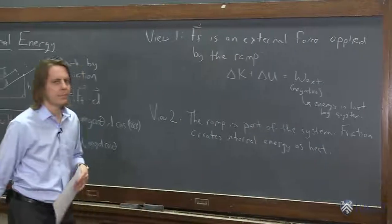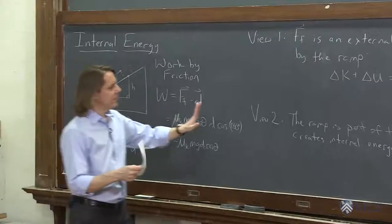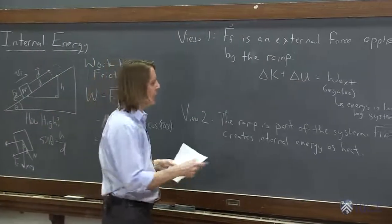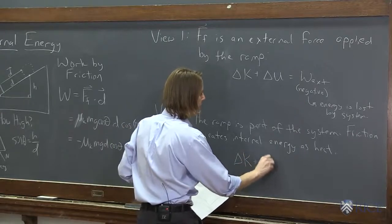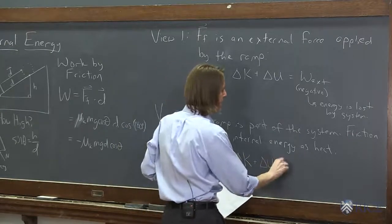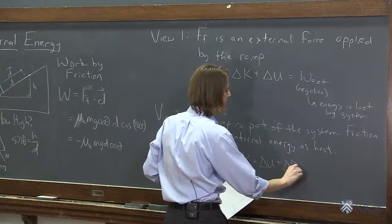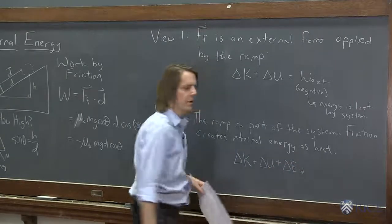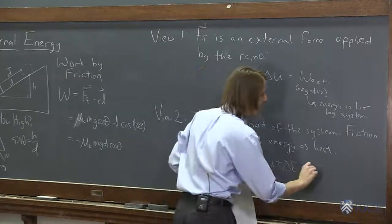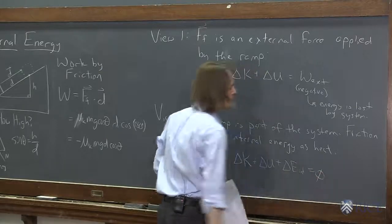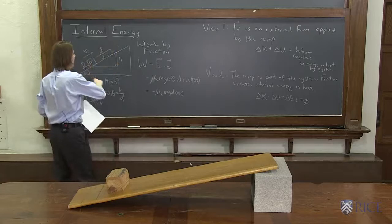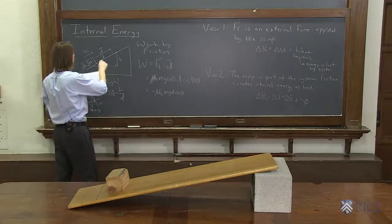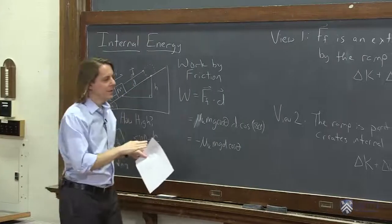So the way you could write this is you could also have a conservation or sort of an energy equation. And you could say, I'm going to conserve changes in kinetic energy plus changes in potential energy plus changes in E-I-N-T, internal energy. Those must be zero. And this will be the case if the system includes the ramp and the mass, because all the heat you make will remain in that system.